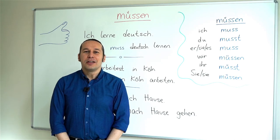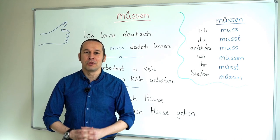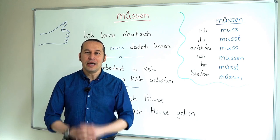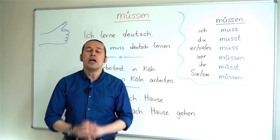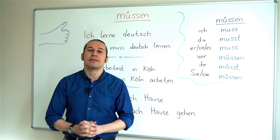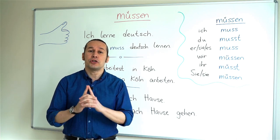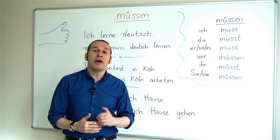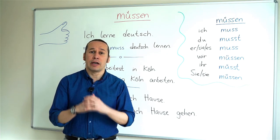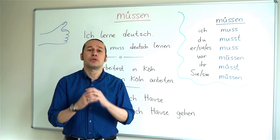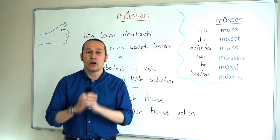Hello everyone! This is your German teacher Erhan Özdemir from Istanbul, Turkey. In this lesson we are going to have müssen. Müssen stands for 'must' in English. First of all we are going to conjugate müssen, and then after we are going to have different kinds of examples. Let's get started with the conjugation.